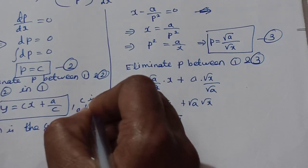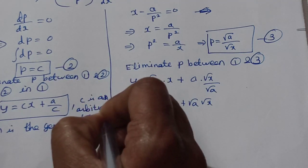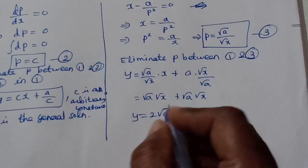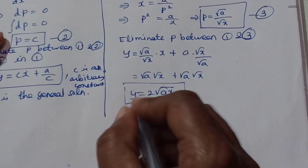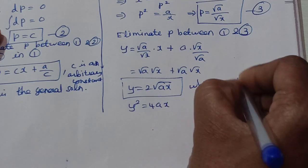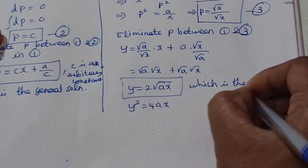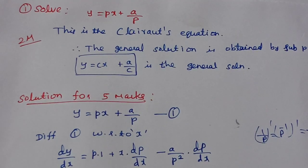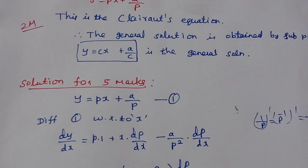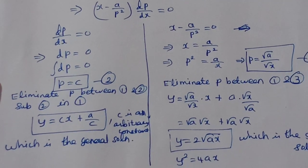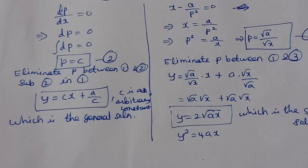The arbitrary constant gives the general solution. The singular solution — where there is no arbitrary constant — can be found as well. For example, y squared equals 4ax is the singular solution. So for Clairaut's form, whether it's a 2-mark or 5-mark question, you need to state the general solution and the singular solution.